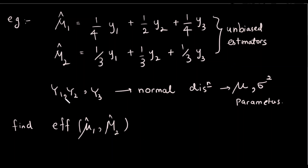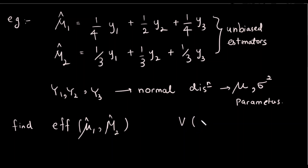So, this involves y1, y2, y3. This is the parameter, mu1 and mu2. So, this is the parameter — mu1 and mu2 — and we have mu2 hat divided by mu1 hat.